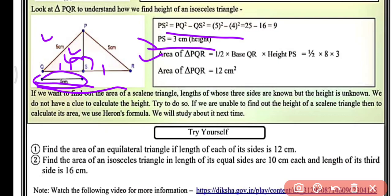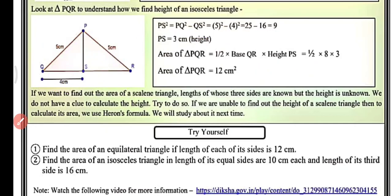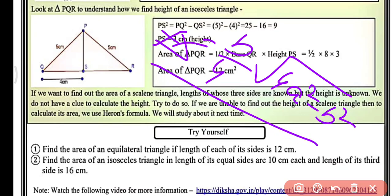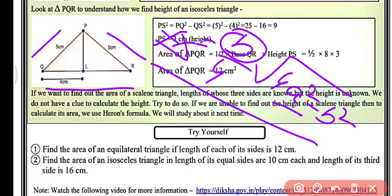Area of triangle PQR equals 1/2 into base QR into height PS, that is 1/2 into 8 into 3, giving area of triangle PQR as 12 cm². We can also directly use the formula for the area of an isosceles triangle: B/4 into √(4A² − B²), where B is the unequal side and A is the equal sides. Remember this formula: B/4 into √(4A² − B²).